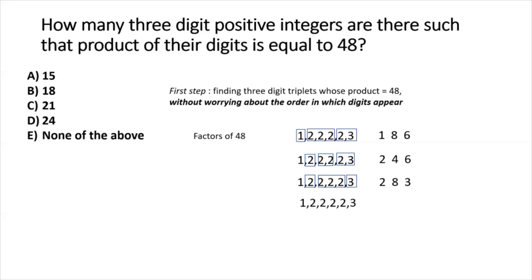What if we start with two 2s, making 4 as the first digit? We could take another two 2s as the second partition, also giving 4. We're then left with 3. So we get the triplet {4, 4, 3}. Note that repeated digits are allowed since the problem places no restriction on that. This completes all the triplets whose product equals 48.